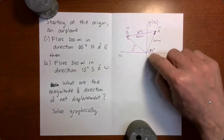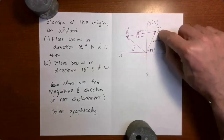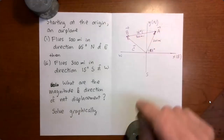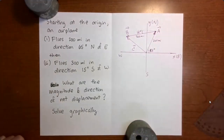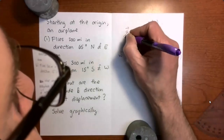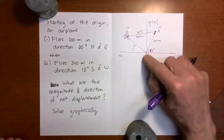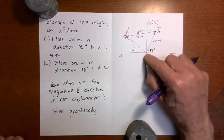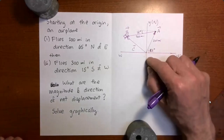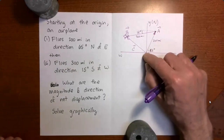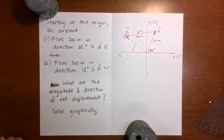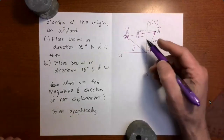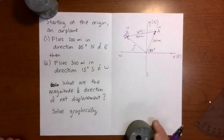After the airplane has gone 200 miles 65 degrees north of east, and then 300 miles in the direction 15 degrees south of west, the airplane ends up at a final position. The resultant displacement is represented by a vector that goes directly from the origin to the final position of the airplane. We want to find the magnitude and direction of this resultant displacement.